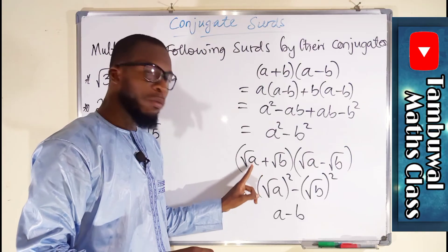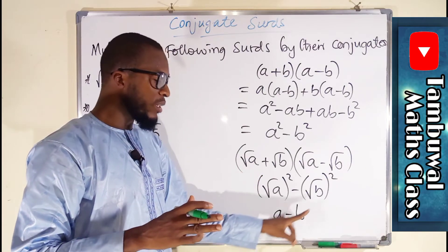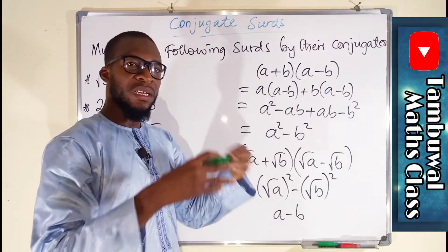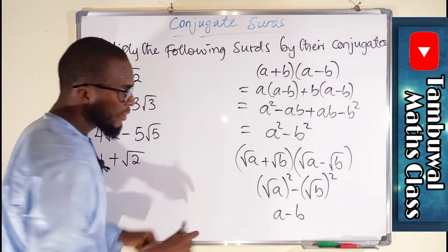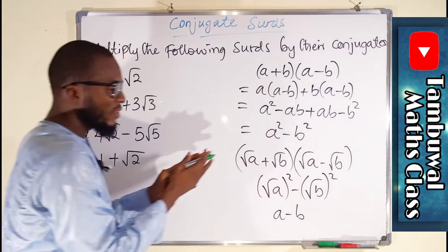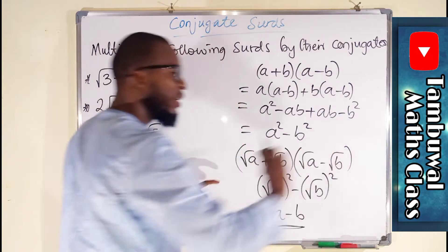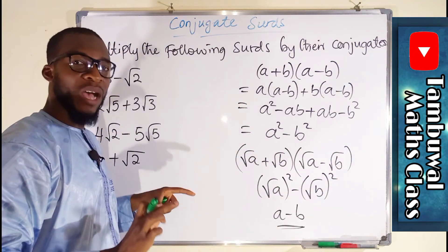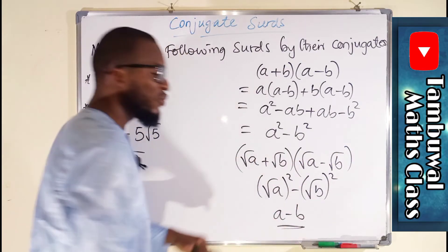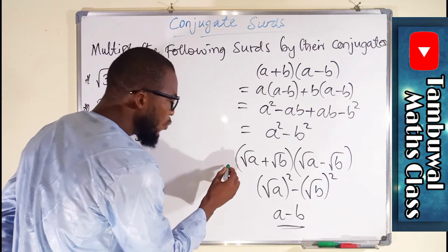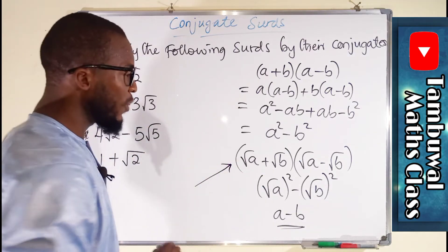Remember, the number under the radical sign is always rational, so a is rational and b is rational. The difference of two rational numbers is also rational. So by multiplying these two surds together we obtain a rational number, while the initial surds are irrational. Therefore, these surds are said to be conjugate of one another.